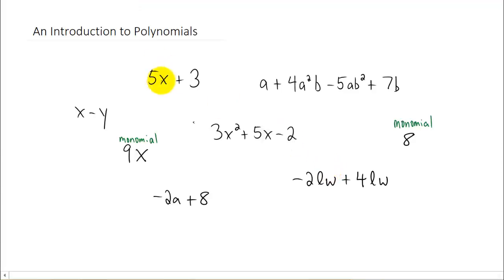I have several examples written here that have two terms. 5x plus 3, x minus y, negative 2a plus 8, and negative 2lw plus 4lw all just have two terms. If a polynomial has two terms, it's called a binomial. Bi meaning two, like a bicycle, two wheels.